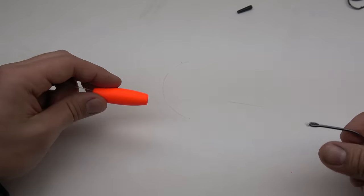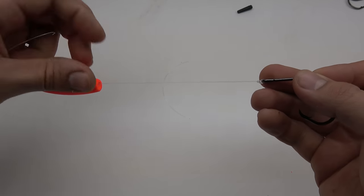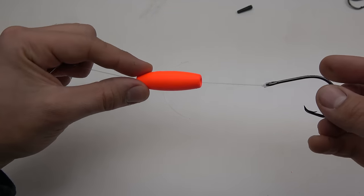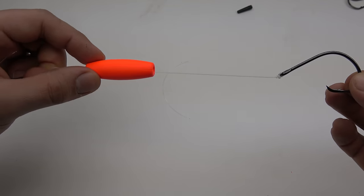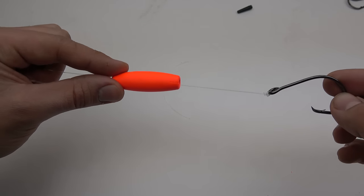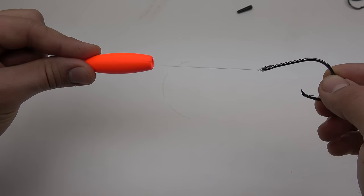Now this is also important. You want to set your peg float 2 to 4 inches away from the hook. You can experiment with that. Everybody has a different preference, but that seems to be the general consensus.